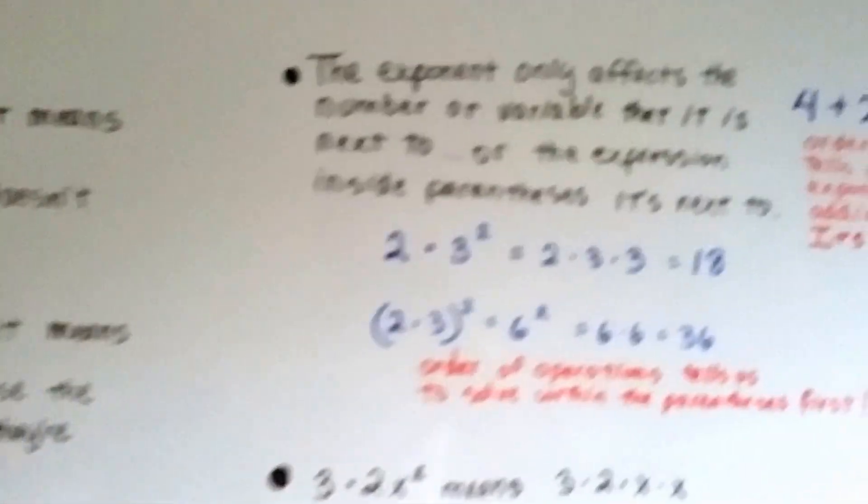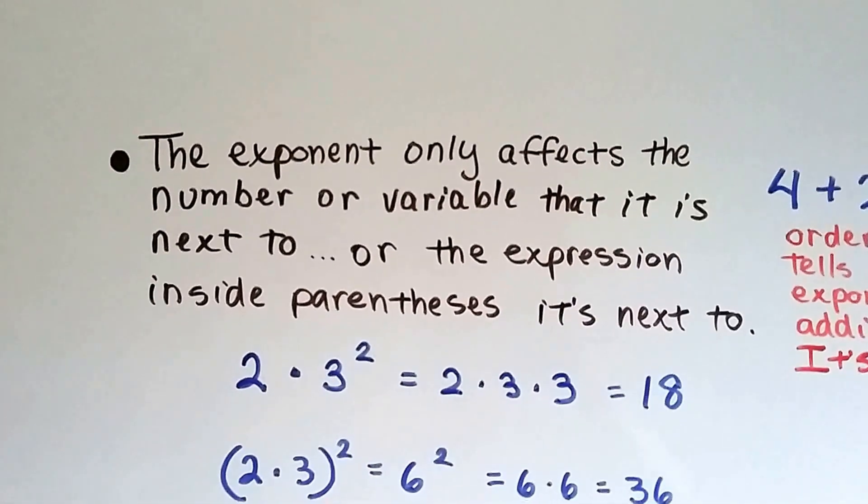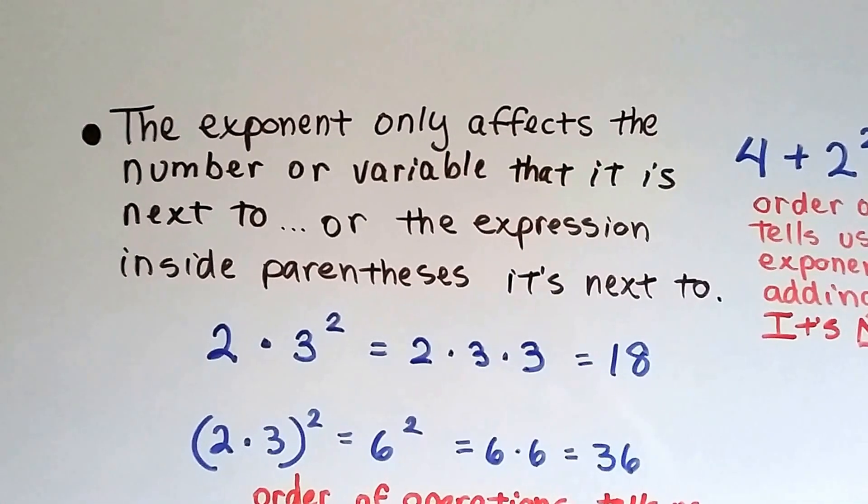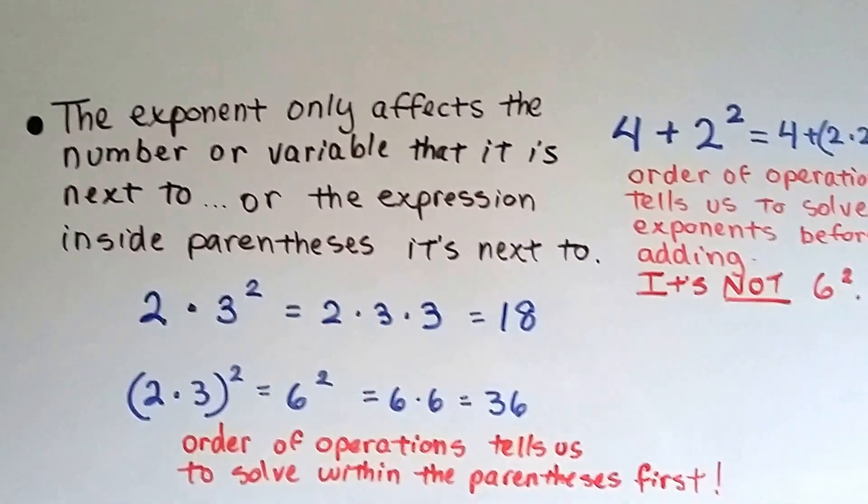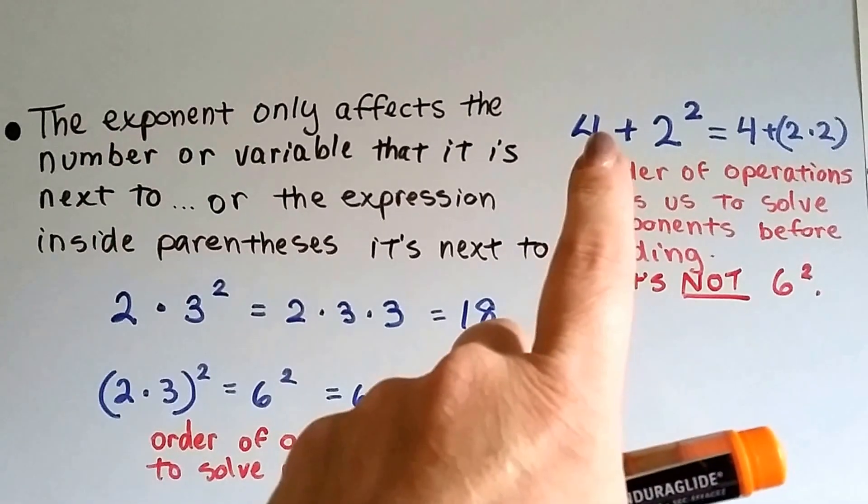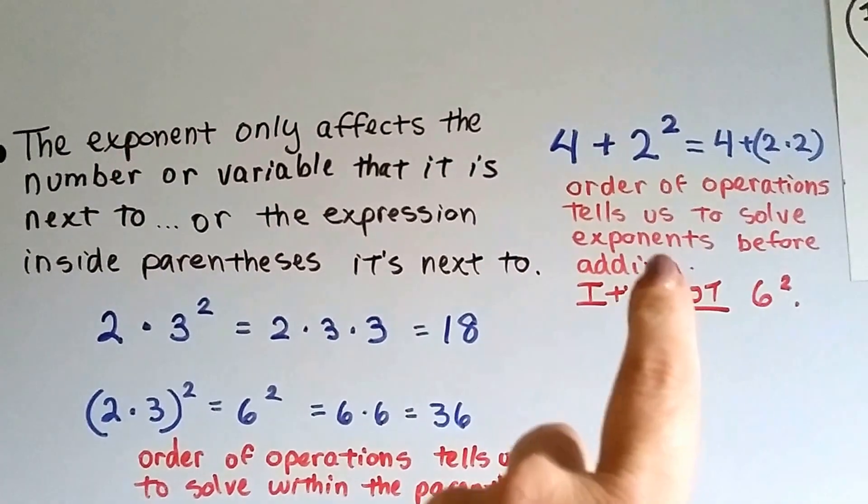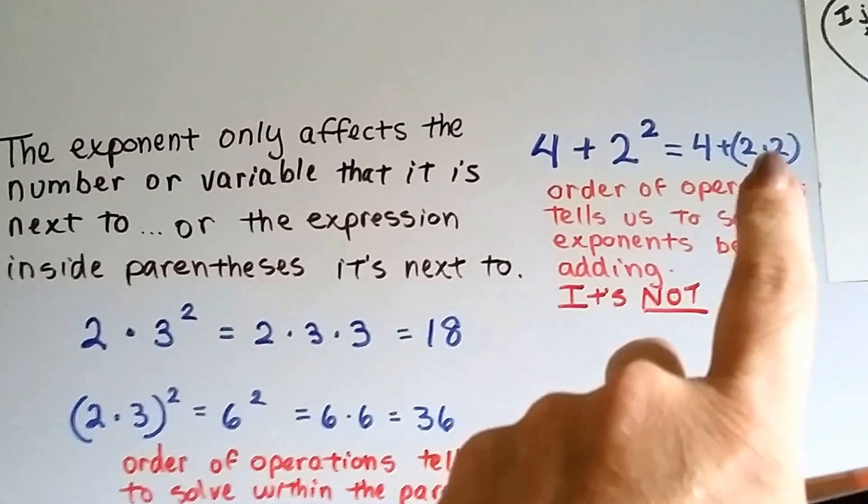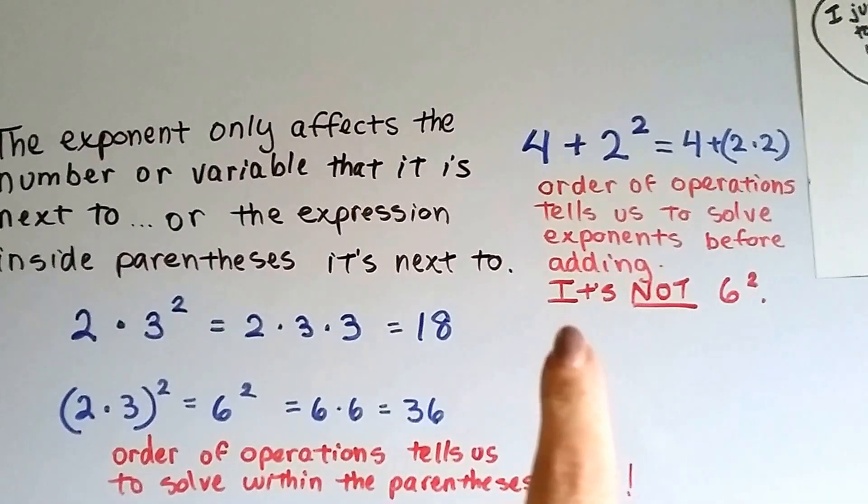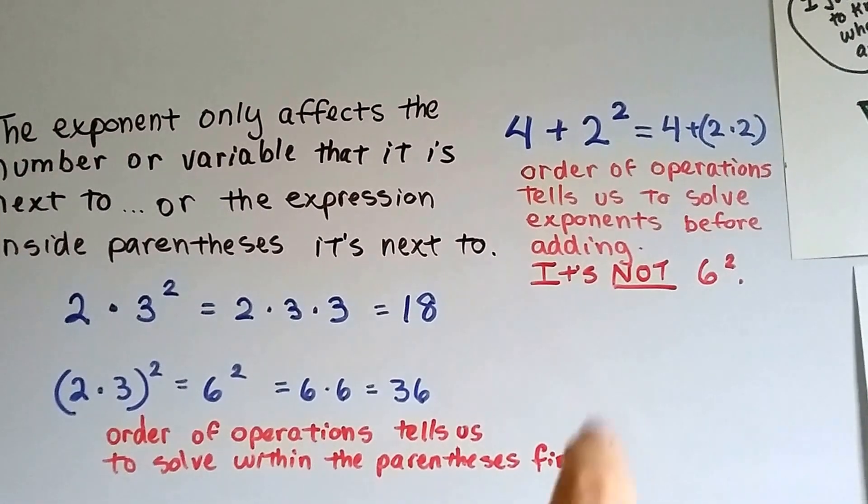And the exponent only affects the number or variable that it is next to or the expression inside the parentheses it's next to. If we saw 4 plus 2 to the second power, it means 4 plus 2 times 2. The order of operations tells us to solve the exponents before adding.